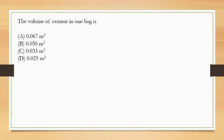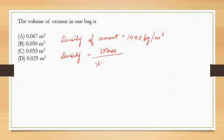The first question is: the volume of cement in one bag is? Options are 0.067 m³, 0.050 m³, 0.033 m³, and 0.025 m³. We know that density of cement equals 1440 kg/m³. We also know that density is given by mass divided by volume.